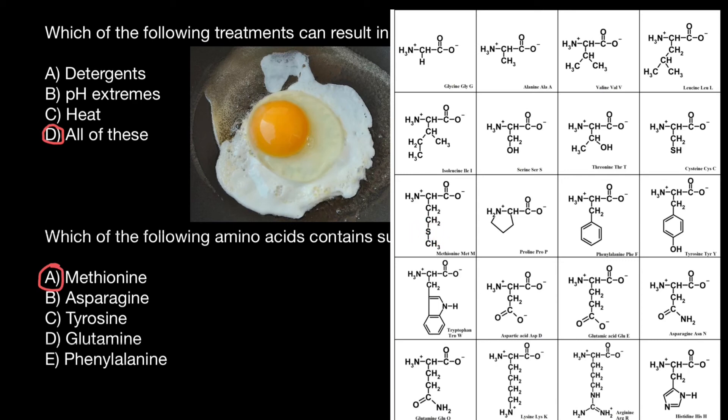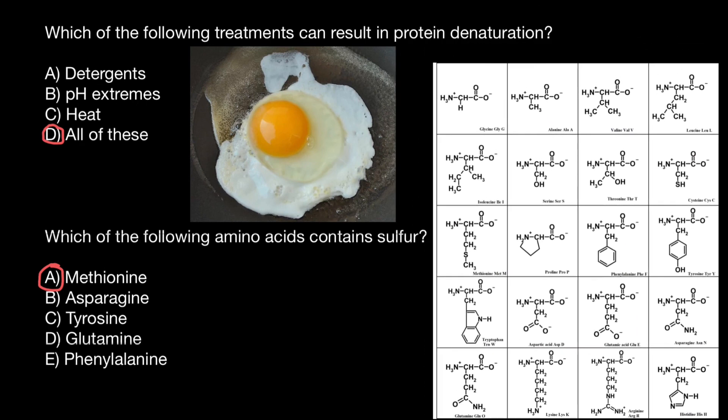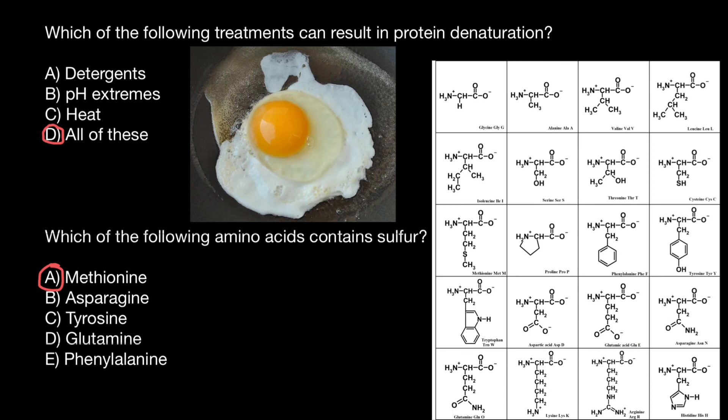This is present in the R chain, and we have only two such amino acids: methionine and cysteine. And this is all for today. Thank you for your attention. Please subscribe for my new videos that I post almost every day. See you in the next video. Goodbye!